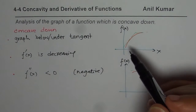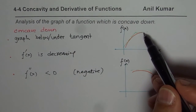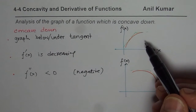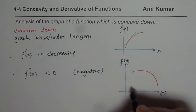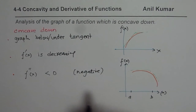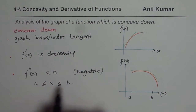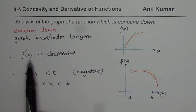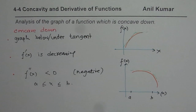Wherever the graph of a function is concave down, the tangent will be above the graph, the derivative will always be decreasing, and the second derivative will be negative. So if the graph is concave down between interval a and b, then in this interval you'll notice the graph is below the tangent line, the derivative is decreasing, and the second derivative is always negative. That is what we understand by the concave down part of the graph.